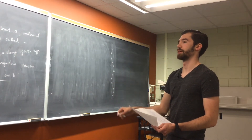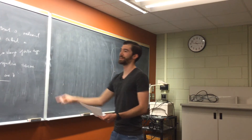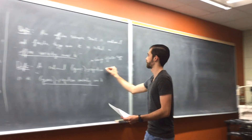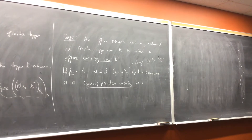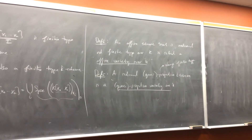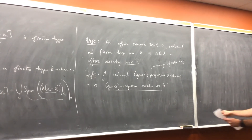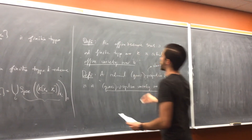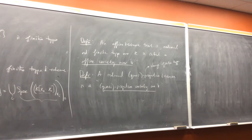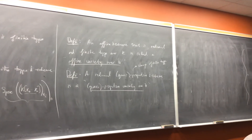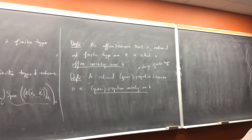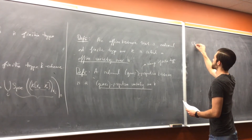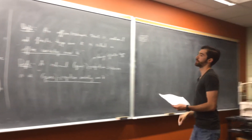I'm still averaging one definition per board. There should be a k-scheme condition — you're right, because we've only said what it means to be finite type over k, so it needs to be a k-scheme to do that. I think even Vakil says something like, this is really cumbersome notation, but too bad. Sorry that I get to be the one to do this to you all.